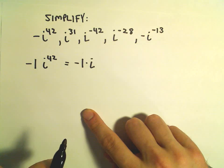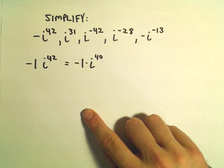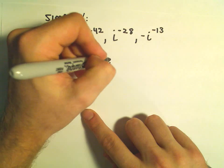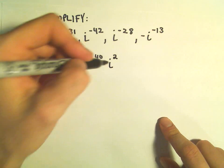But it will go into 40 evenly, it would go 10 times, and then I would need an i squared. Okay, so what do we have here?